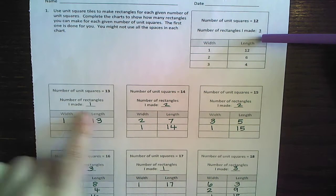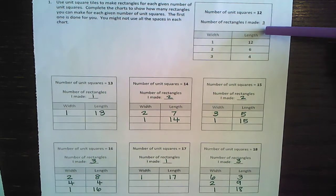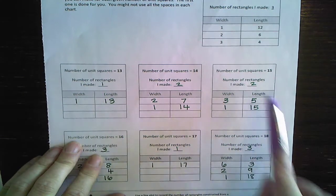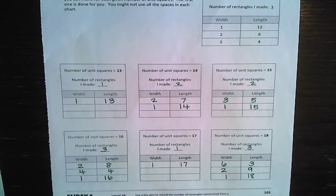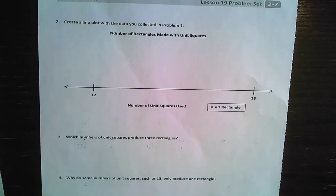And then we have 12 to 18. Okay. So we need to fill in those blanks. Here's 12. We need to do 13, 14, 15, 16, 17, and 18. And then we're going to fill in with Xs how many rectangles we were able to make with each of those square unit tiles slash with that area.